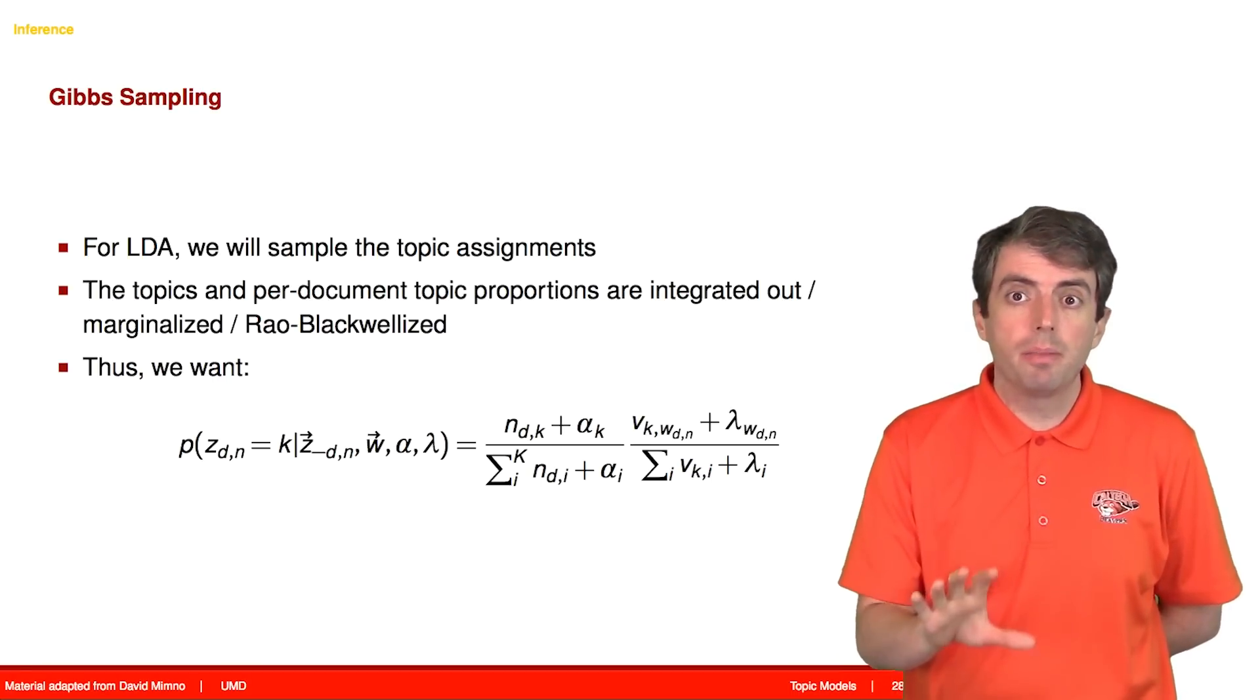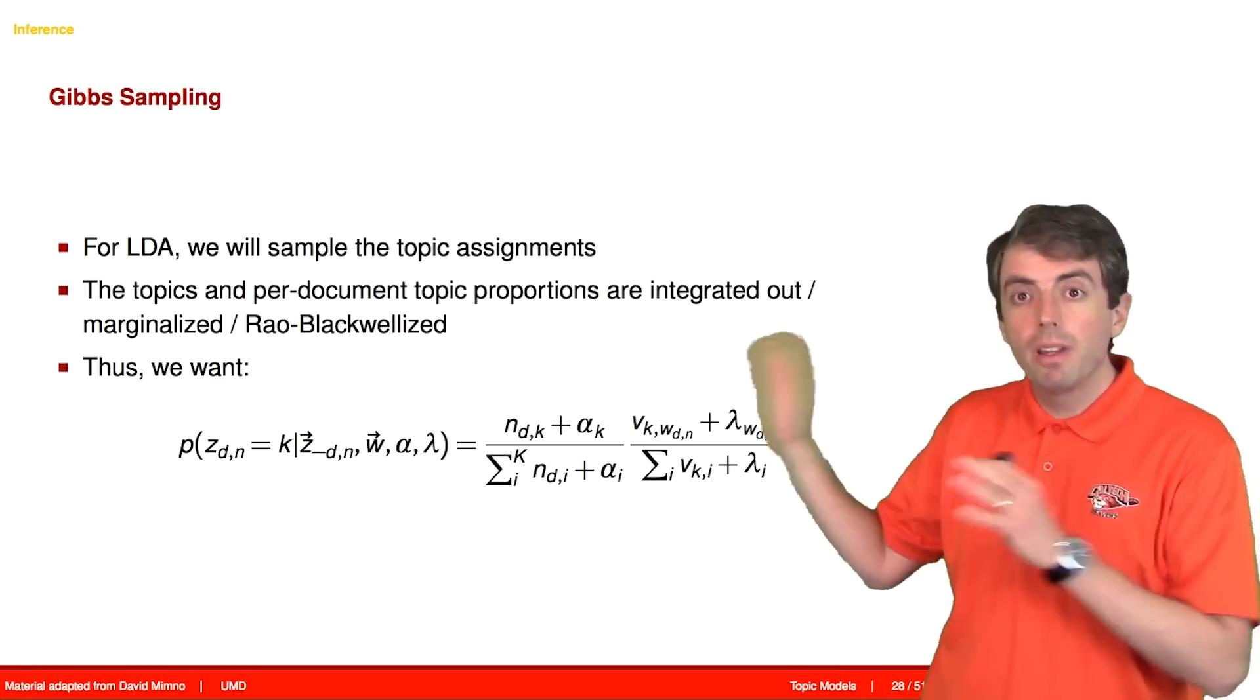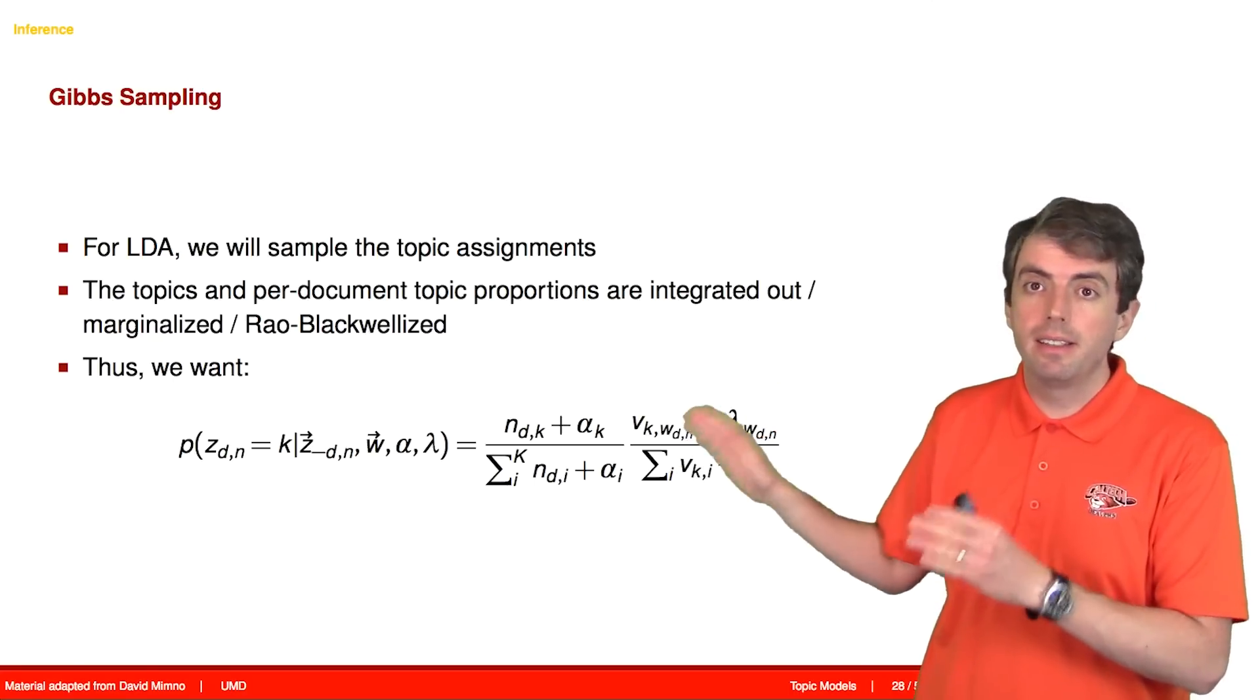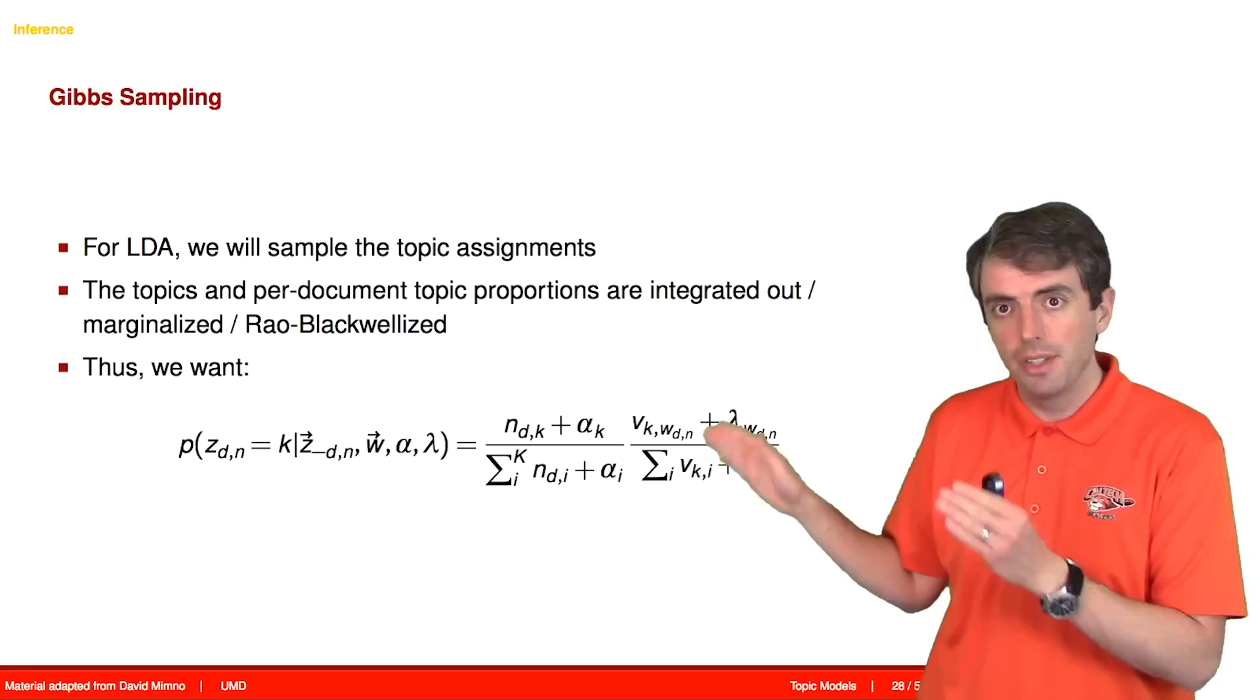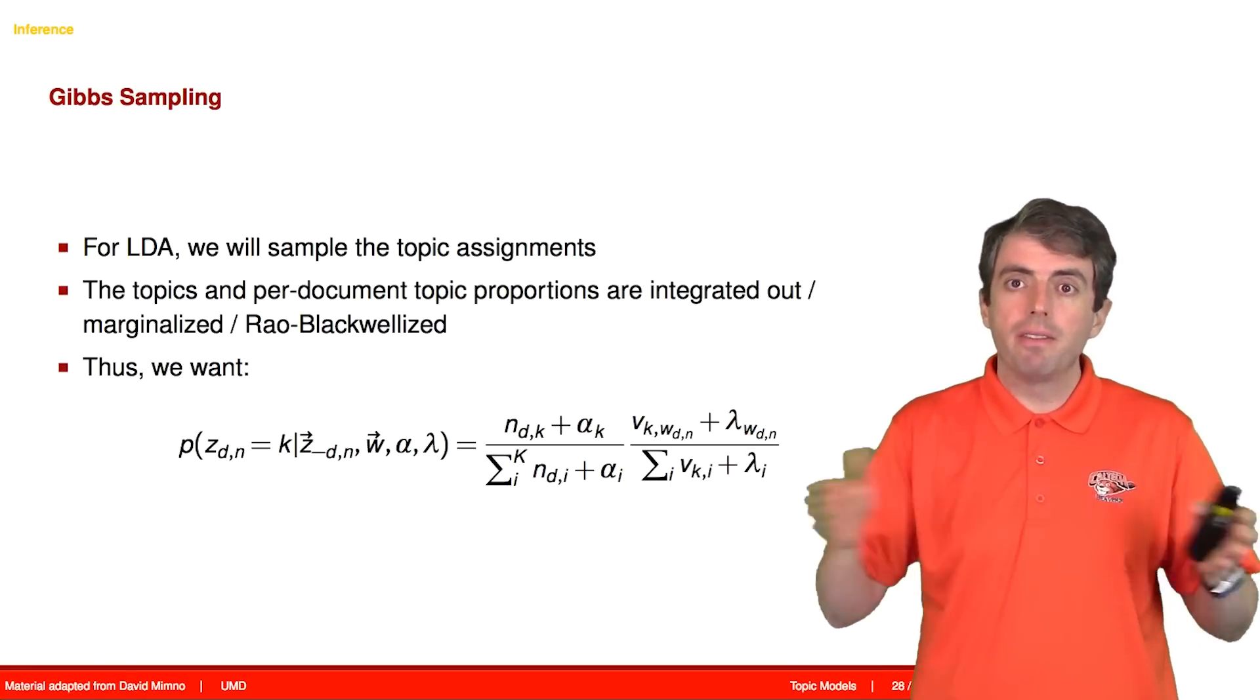We'll go into each of these parts in more detail. One thing that you need to remember is that this is a conditional probability distribution for a single word in a single document. So this is going to be a vector.